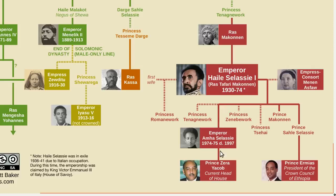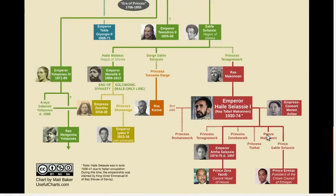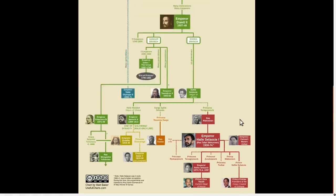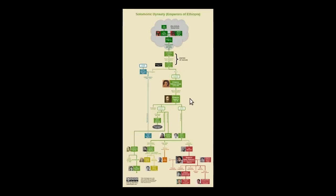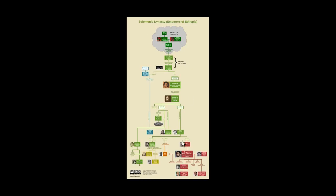Today, his grandson Zerah Yaqob is the most senior heir to the former throne. However, his cousin Prince Ermias serves as President of the Crown Council and officially represents the former monarchy when needed. So that's a brief overview of the Ethiopian house of Solomon. You can download the image for free using the link in the description. If you like learning about famous dynasties from world history, be sure to subscribe to the channel.